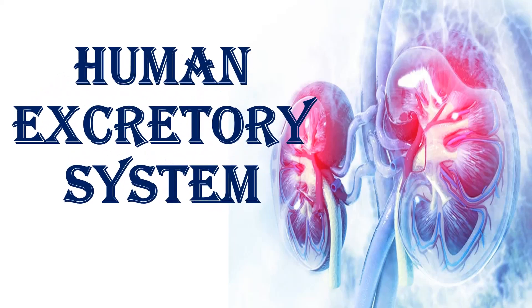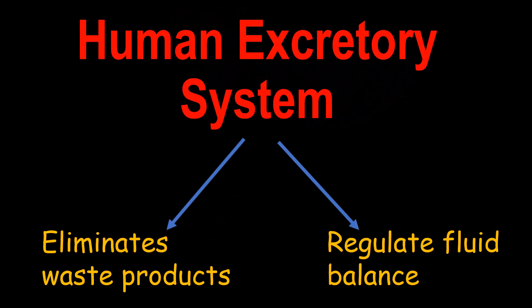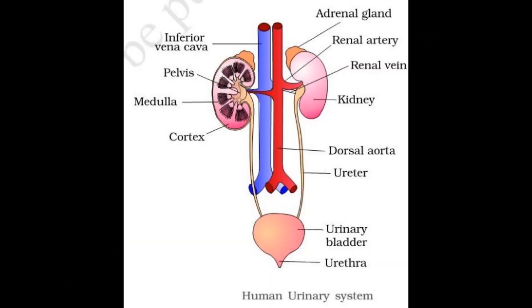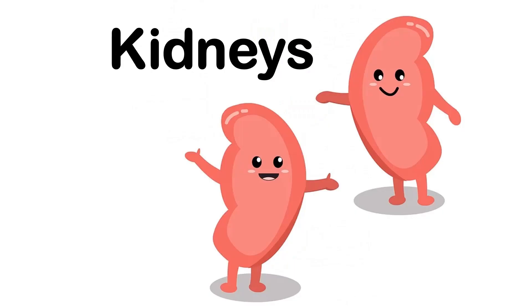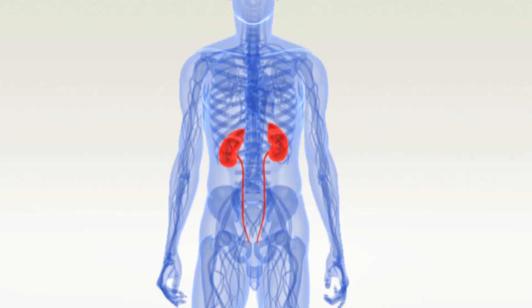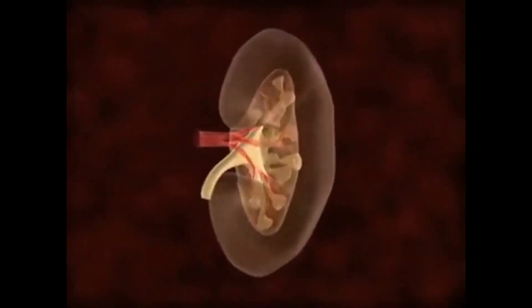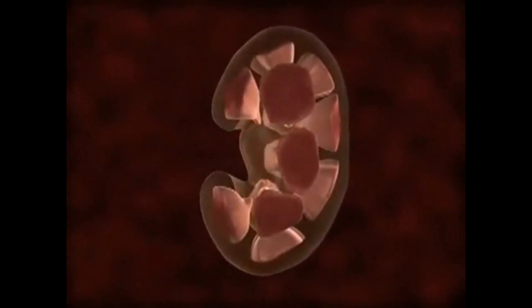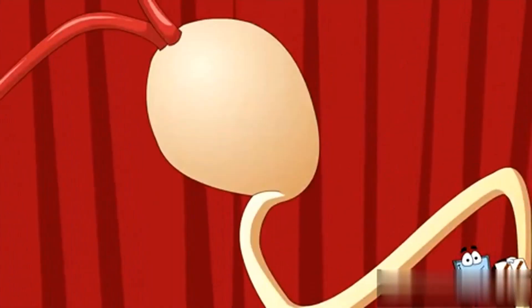The excretory system is crucial for maintaining the body's internal environment by eliminating waste products and regulating fluid balance. The human excretory system comprises the following structures. Kidneys: these two bean-shaped organs sit in the middle of your back just under your rib cage. These are the main organs of the excretory system and they help in filtering blood and producing urine.